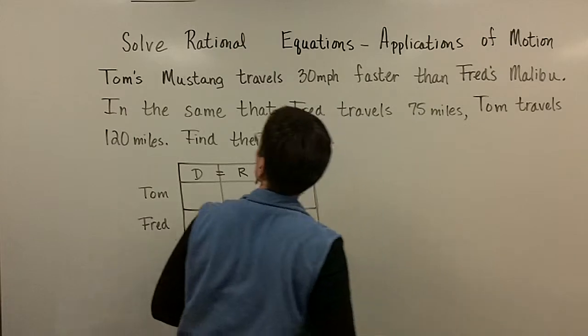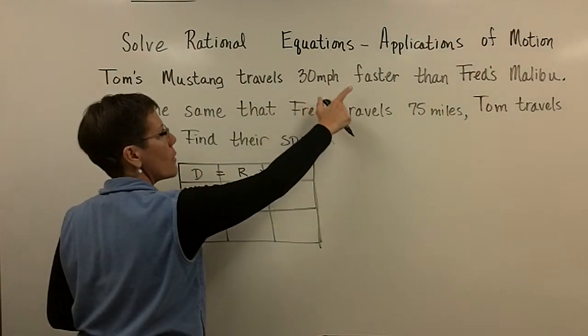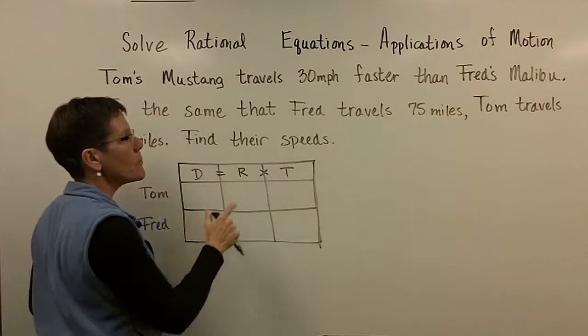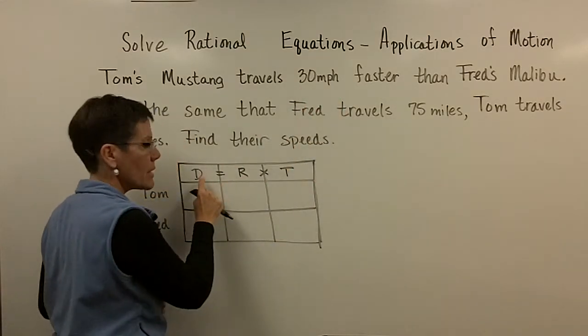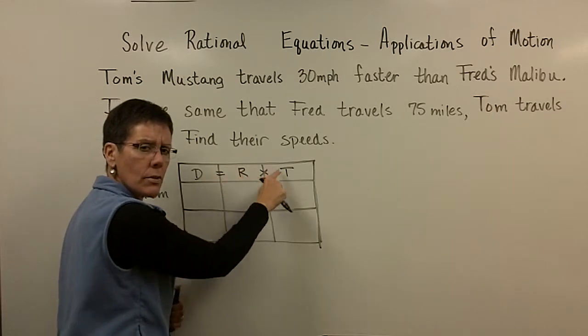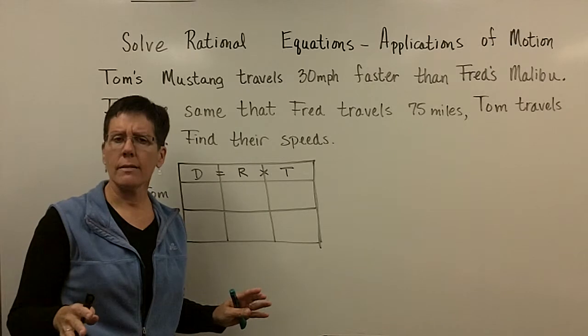So next, Tom is in his Mustang and it travels 30 miles per hour faster than Fred's Malibu. Miles per hour. Is that a distance, a rate, or a time? So you've got to stop and process that. That's speed. That's a rate.